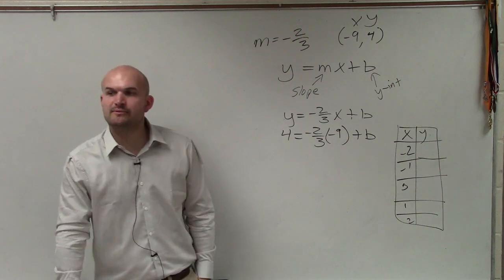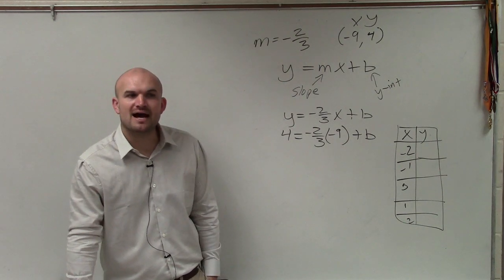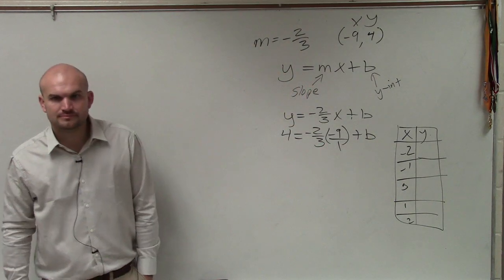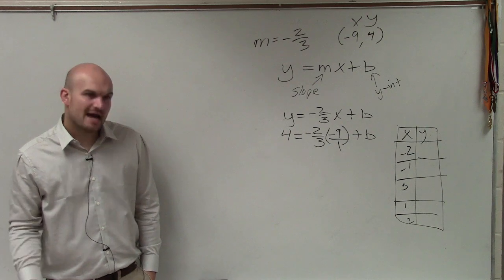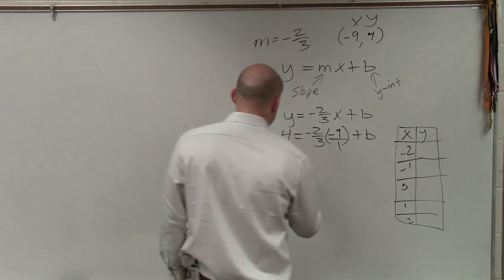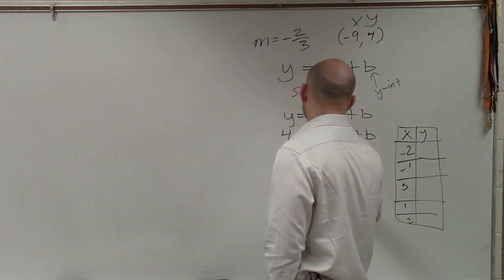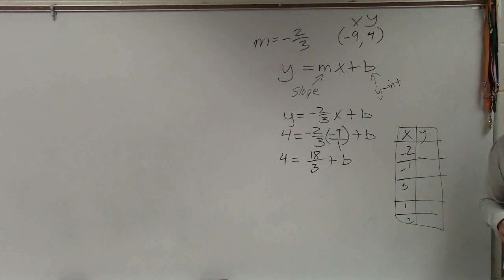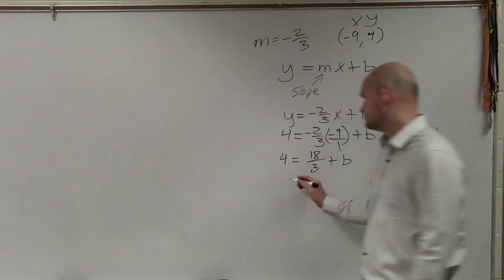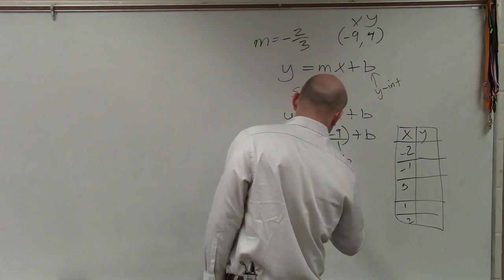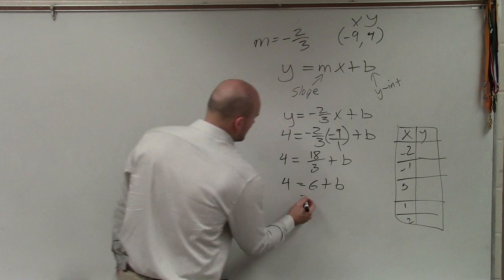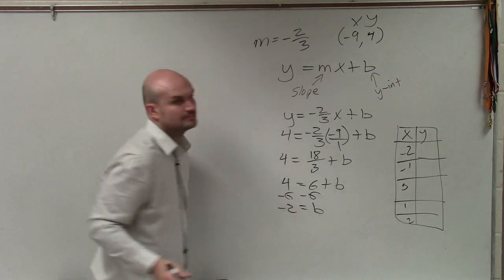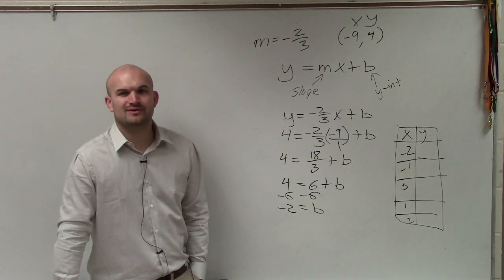Now remember, ladies and gentlemen, when you're multiplying a fraction by a whole number, convert your whole number to a fraction by putting it over one. Now you can go ahead and multiply across if you want to, or you could simplify it. So now we have 18 divided by 3, which is going to be 6.